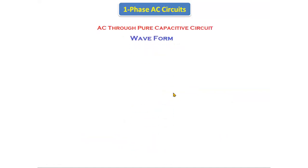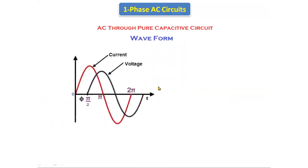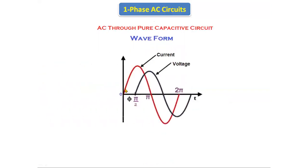If we observe the waveforms, current is leading here. The current is starting from zero position, the positive half cycle is ending at pi degrees, and the negative half cycle is ending at 2 pi degrees. This is the current waveform.